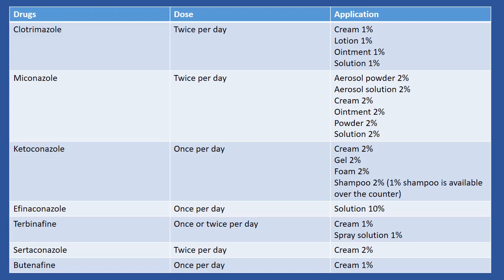Overview of individual topical antifungal therapy. Clotrimazole: available as 1% cream, lotion, ointment, and solution — apply twice a day. Miconazole: comes in 2% aerosol powder, aerosol solution, cream, ointment, powder, and solution — apply twice a day. Ketoconazole: available as 2% cream, gel, foam, and shampoo — apply once a day.